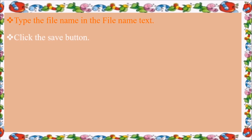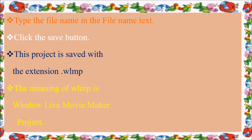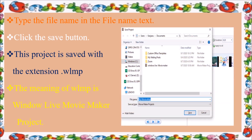You can go to click the Save button. Click the Save button to save the project. The project is saved with the extension dot WLMP. WLMP is the extension for Windows Live Movie Maker. This is the view of Save Project.